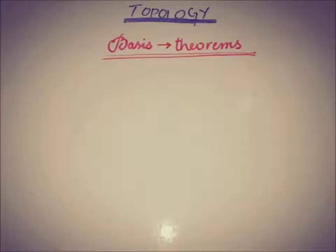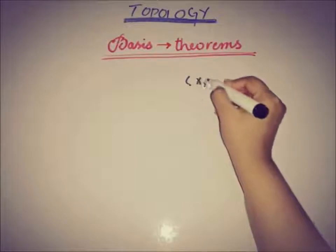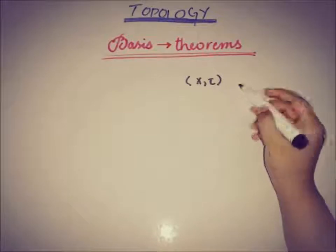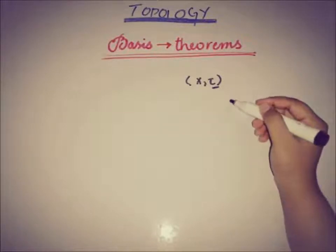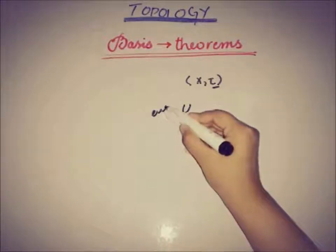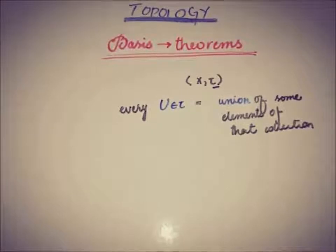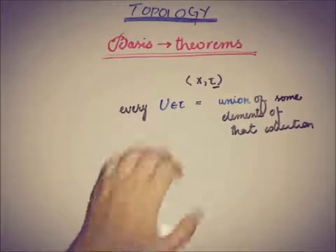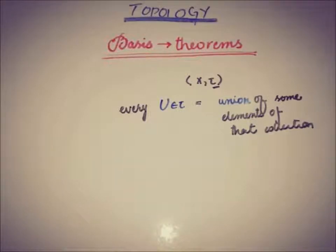Recalling the definition of basis of topology: if (X, τ) is a topological space, a collection of subsets from that topology τ is said to be a basis if every open set of X — that is, all members of the topology — is the union of some members from that collection. This collection is said to be a basis of topology.